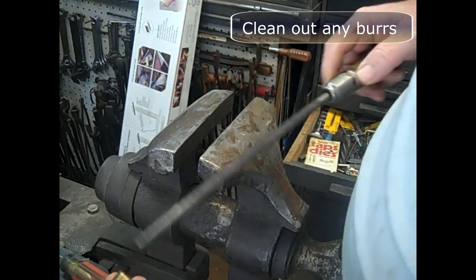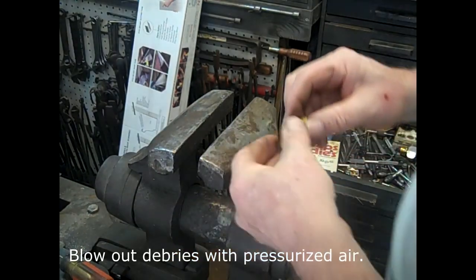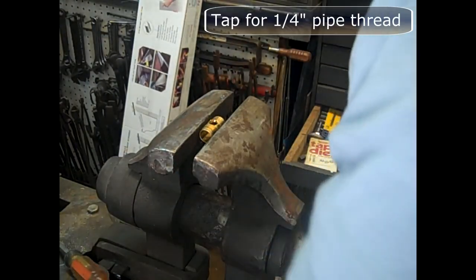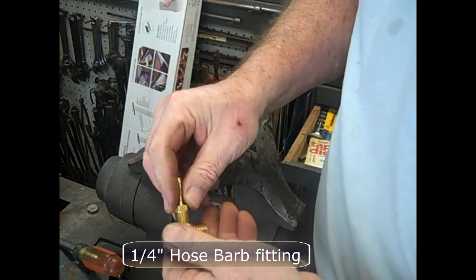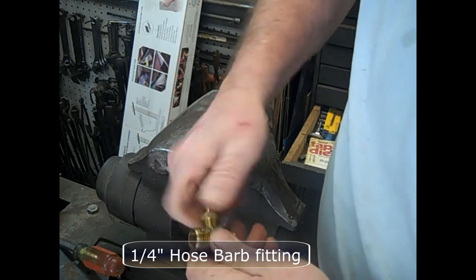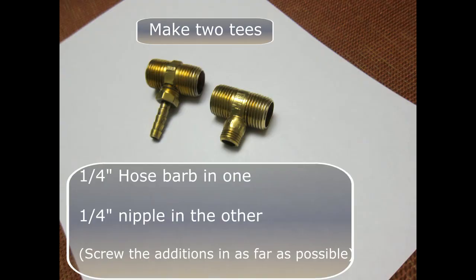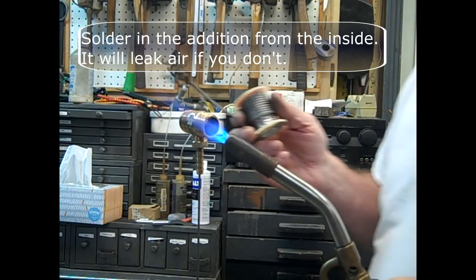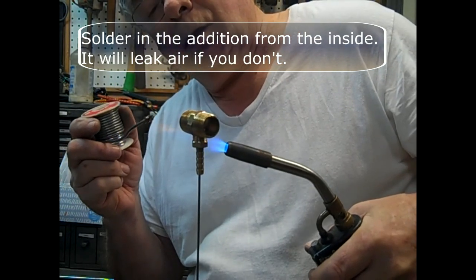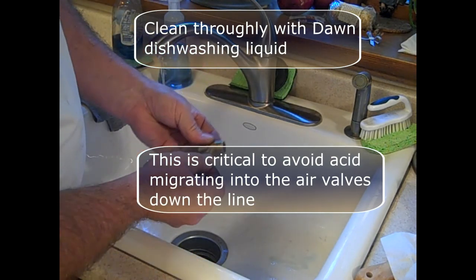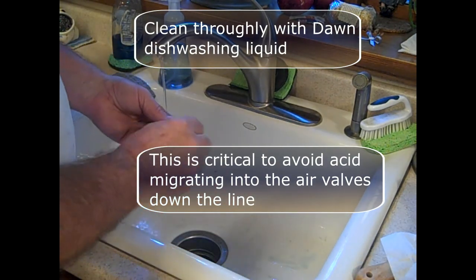Clean out any burrs. Blow out debris with pressurized air. You do not want debris to get into the air valves. Then tap for quarter inch pipe thread. Put on a quarter inch hose barb fitting. We're going to make two T's, one with the hose barb and the other with a quarter inch nipple. Solder in the additions from the inside. They will leak air if you don't. Clean thoroughly with Dawn dishwashing liquid and either q-tips or some other device to get in there. This is critical to avoid acid migrating into the air valves down the line.